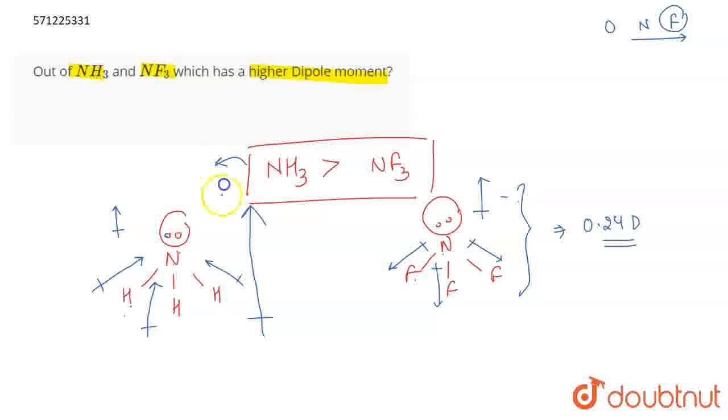Whereas if we talk about NH3, then NH3 has a dipole moment of 1.43 debye. So what is happening in NH3 is that the dipole moment is getting added up, whereas in NF3 it is getting cancelled to some extent. So that's all for the question.